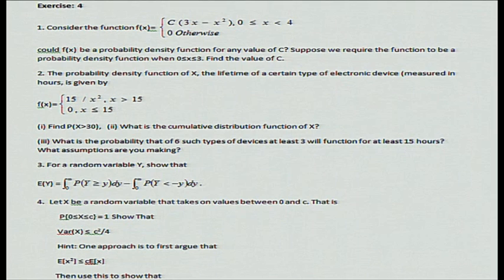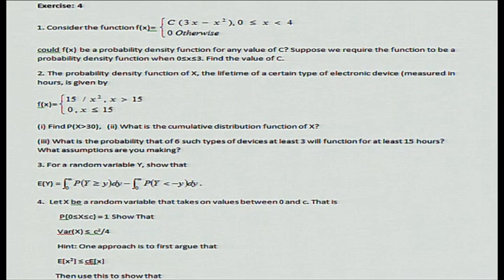Without proceeding further, you can see that since the function can be written as x times (3 minus x), it will be negative for x greater than 3, and your interval is 0 to 4. You might say we can make c negative, but then when x equals 2, 3x minus x squared is positive, so c times (3x minus x squared) will become negative. So for no value of c is the function a PDF, because it is not non-negative for all values of x in the interval [0, 4].